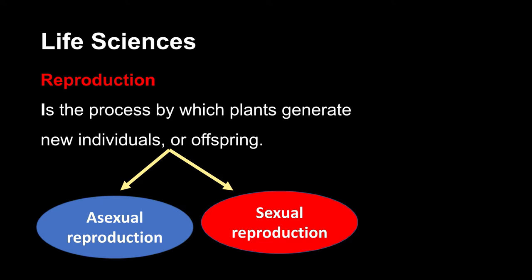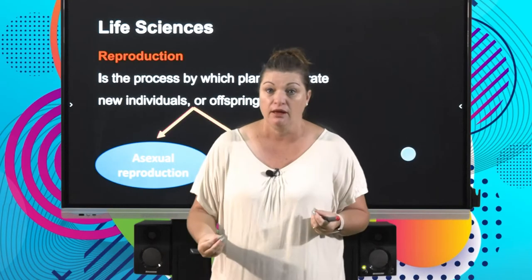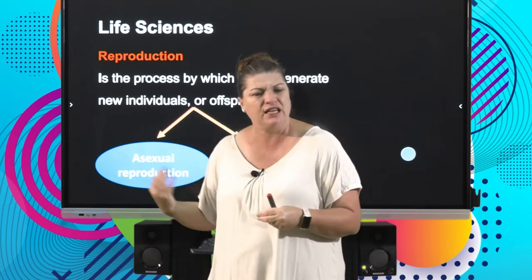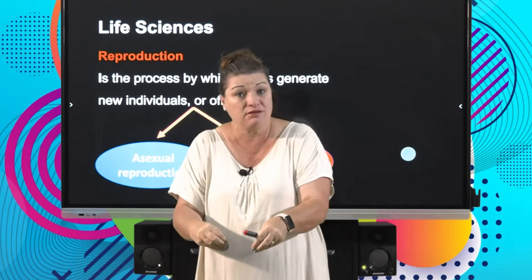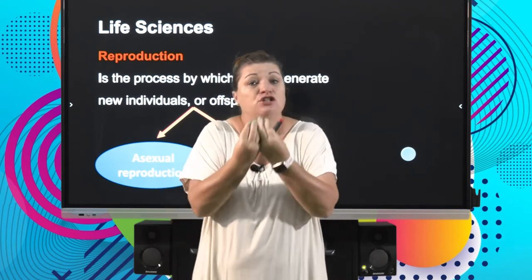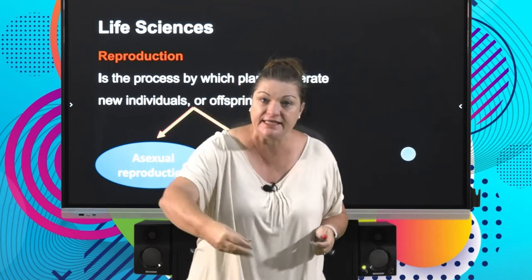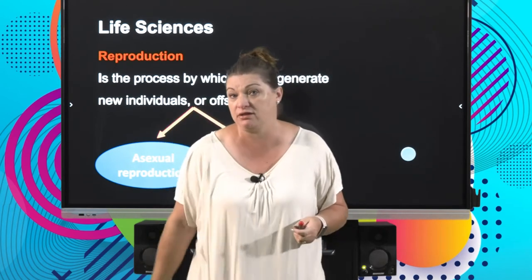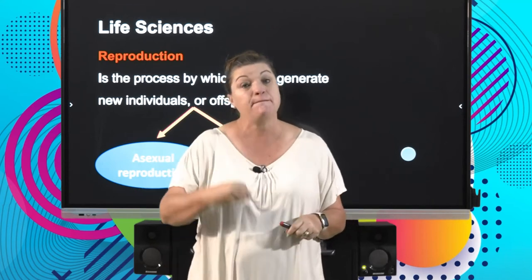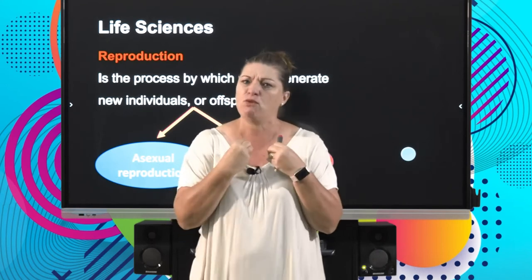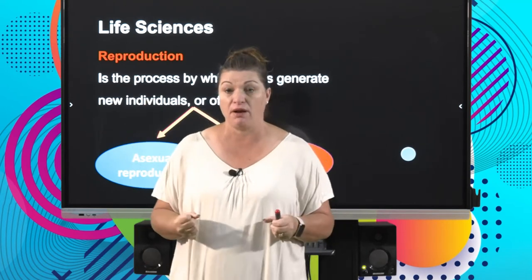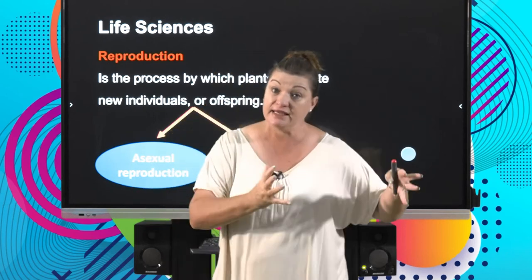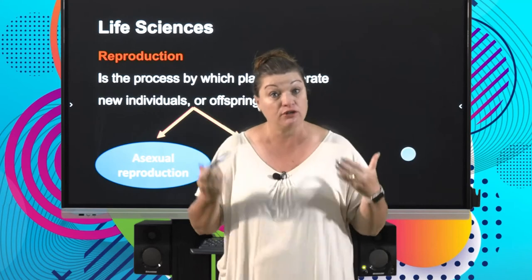The first thing we need to look at is: what is reproduction? The concept of reproduction is to make offspring. Offspring are children, if I could use it — obviously not in the plant sense. So a plant making another plant, a new plant, giving rise to something new, carrying on that species, carrying on the traits of that plant — that is what we're talking about when we look at reproduction. Making more of the plant. The two ways in which it can do that are asexual or sexual.